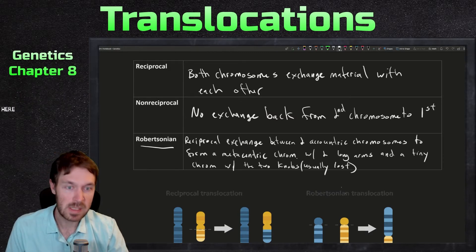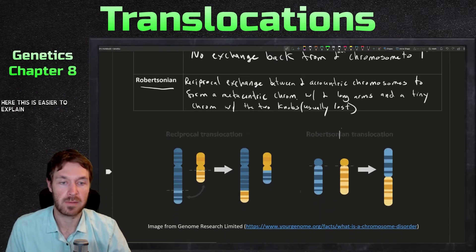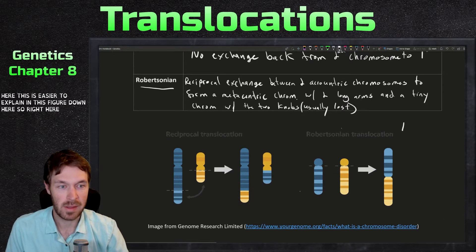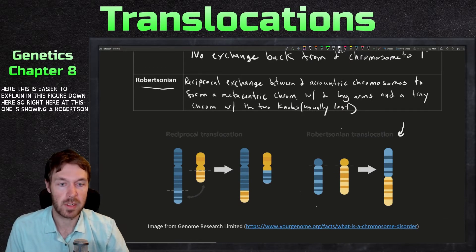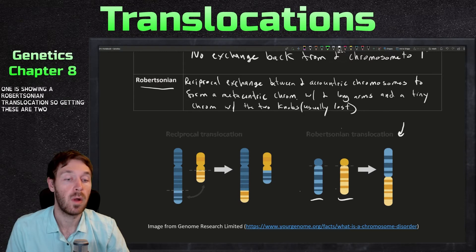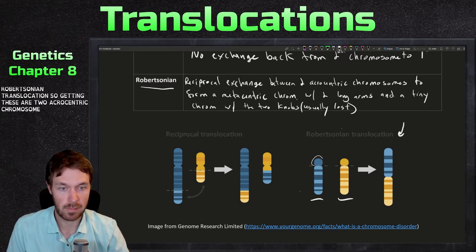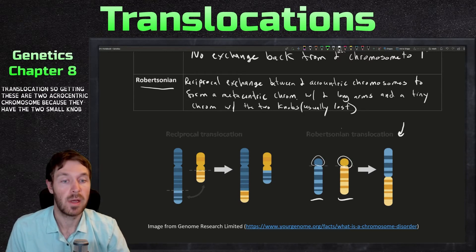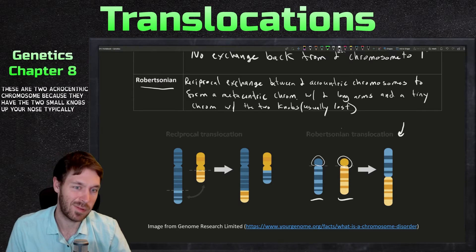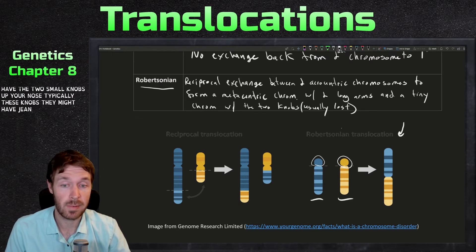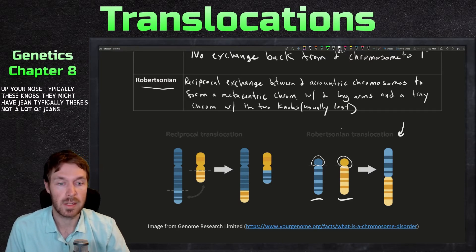So here, this is easier to explain in this figure down here. So right here, this one is showing a Robertsonian translocation. So again, these are two acrocentric chromosomes because they have the two small knobs up here. Now typically these knobs might have genes. Typically there's not a lot of genes in these knobs.